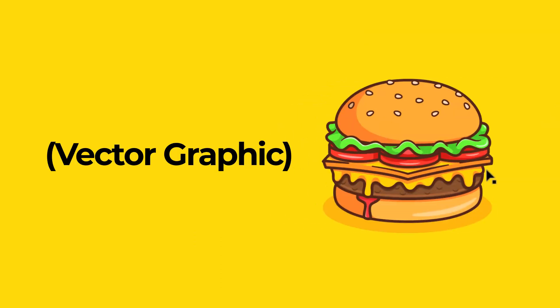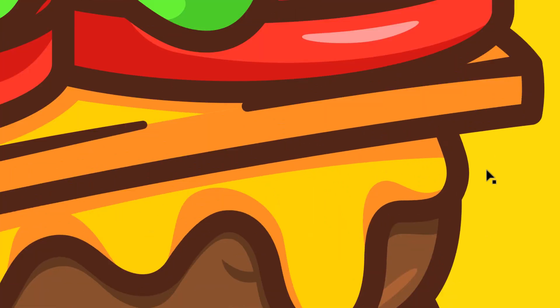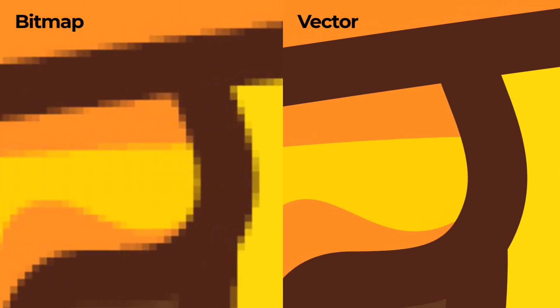If you're wondering what a vector graphic is, essentially it is a type of image made up of shapes and points that allows you to scale it to virtually any size. This is a great alternative to bitmaps, which are made up of little pixels of color that can't be enlarged beyond a certain point without losing quality.